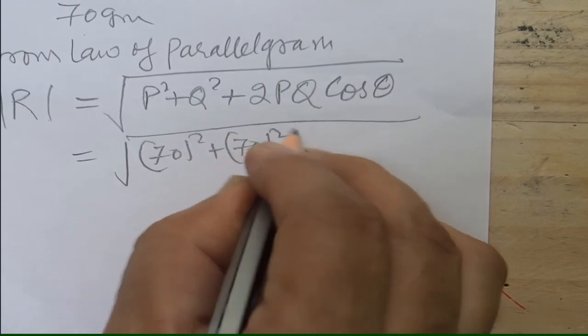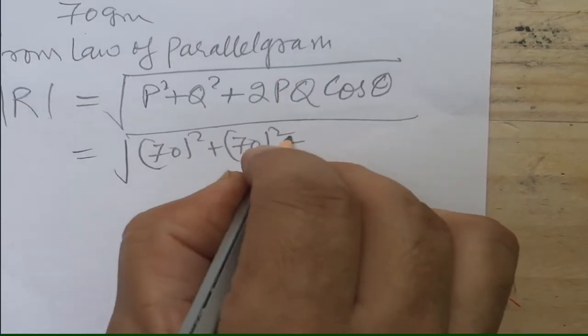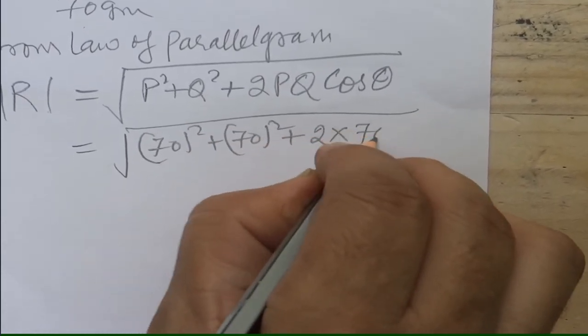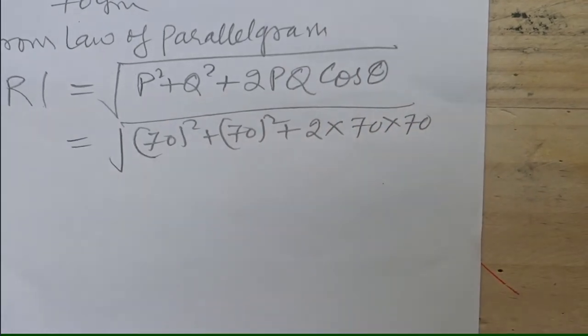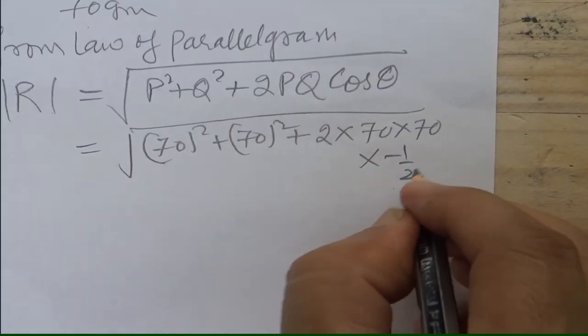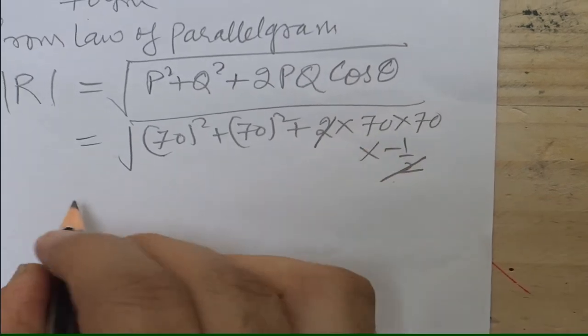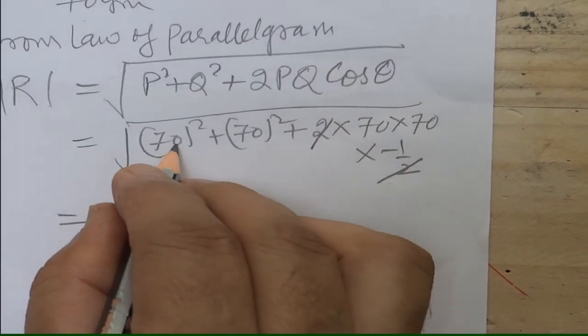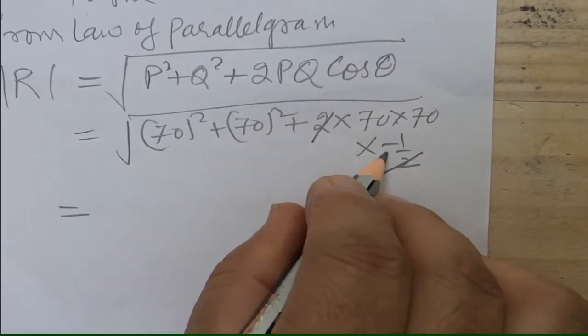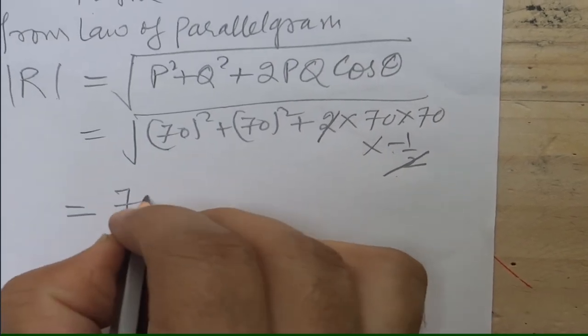This comes out, 70 square gets cancelled because minus is coming here, so your answer is 70 grams. And according to the scale, the length of the diagonal should be 3.5 centimeter.